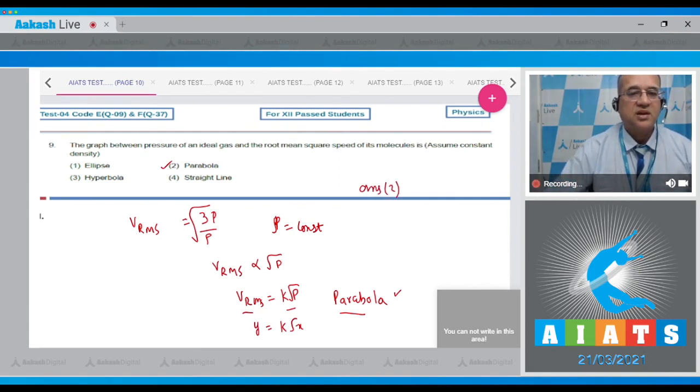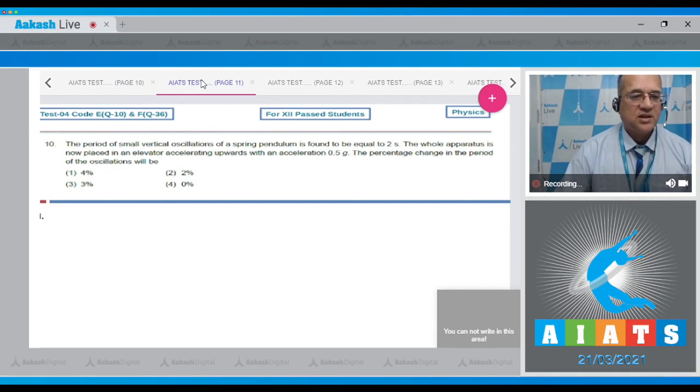Question number 10: The period of small vertical oscillation of a spring pendulum is found to be equal to 2 seconds. The whole apparatus is now placed in an elevator accelerating upward with an acceleration of 0.5g. Find the percentage change in time period of oscillation. You have to be alert that it is a spring pendulum, and the spring pendulum time period is not affected by any acceleration from outside.